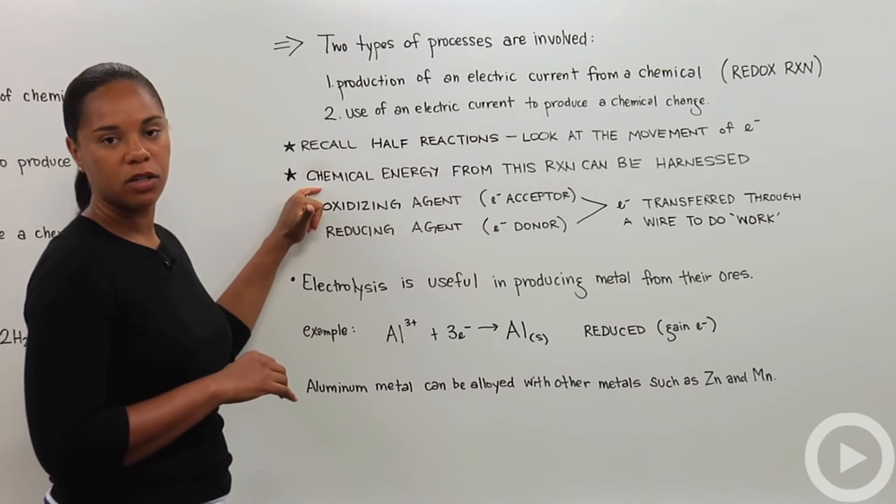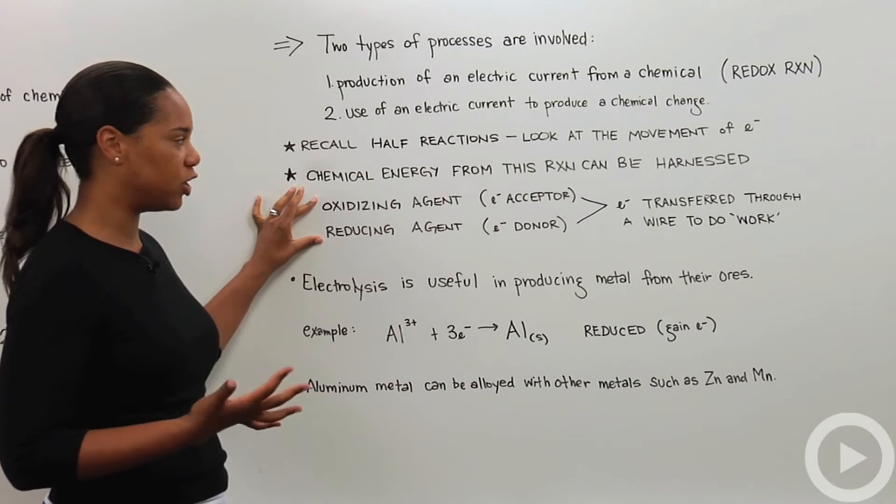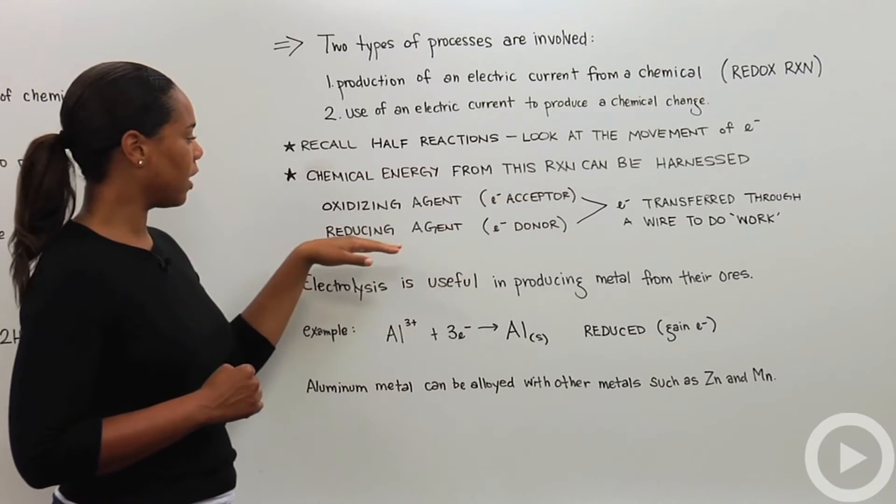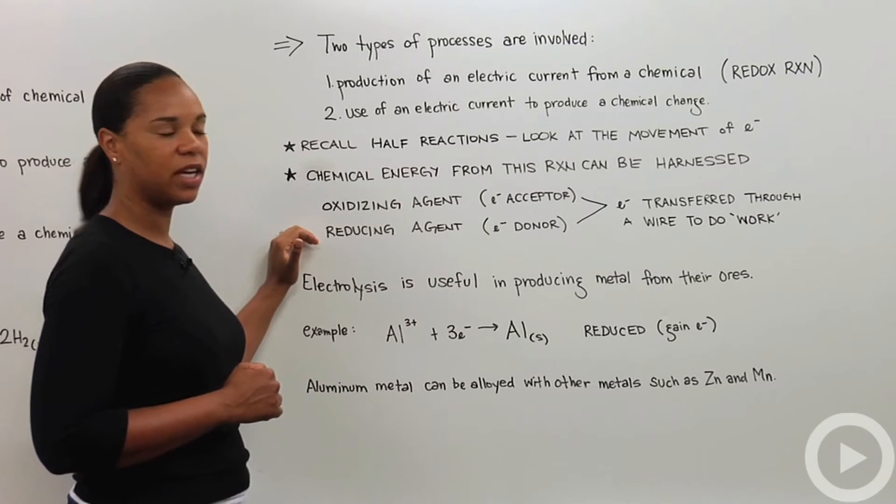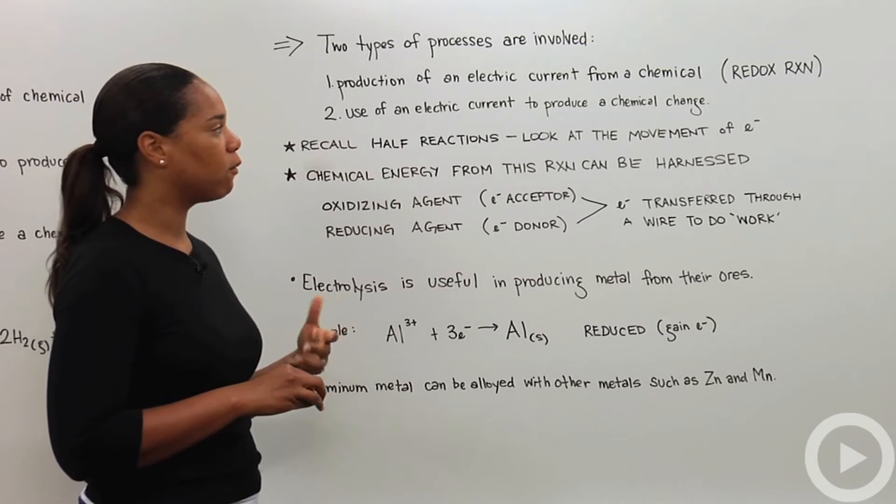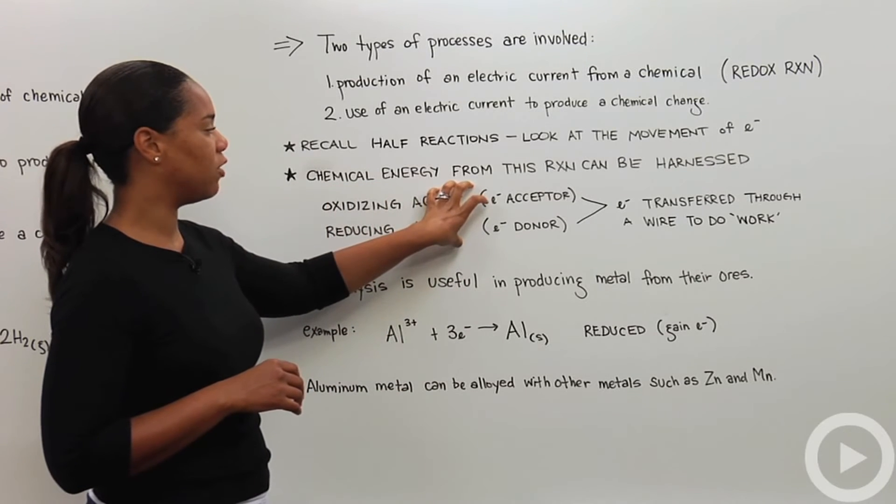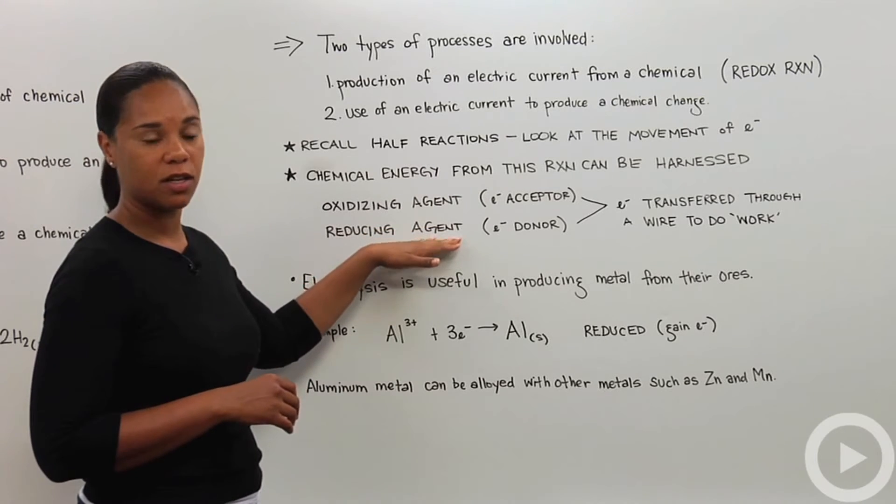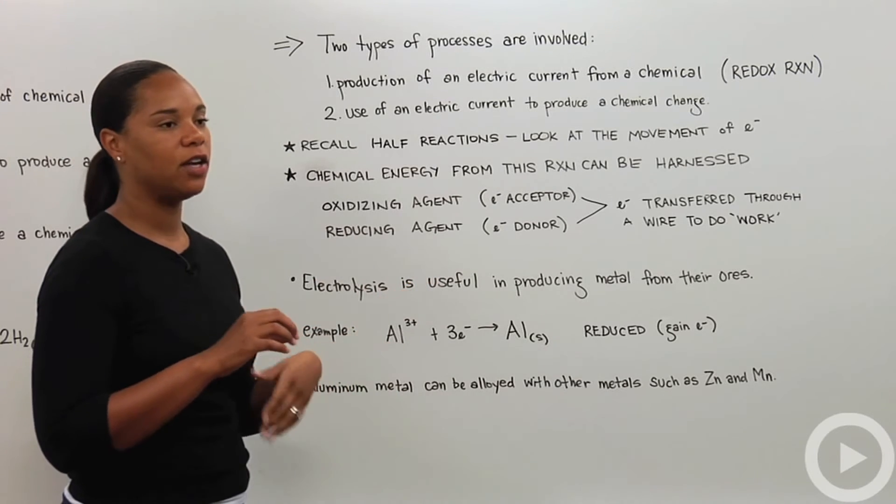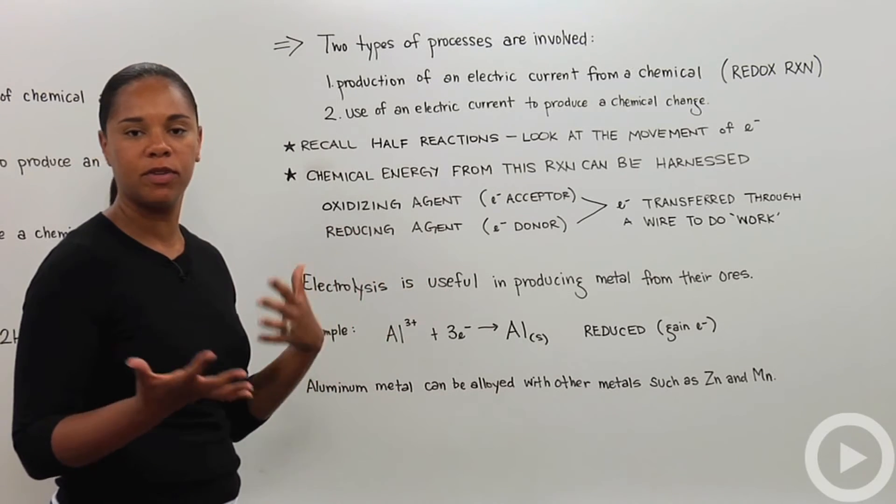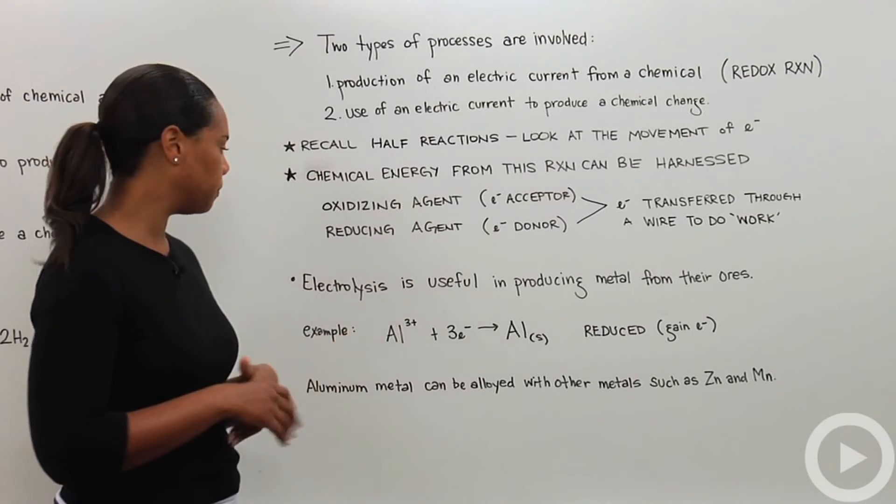From a redox reaction, you can harness that chemical energy. You'll have what we call an oxidizing agent or the electron acceptor, and a reducing agent or the electron donor. Try not to get oxidizing agent and reducing agent confused with which one is actually being oxidized and which one is being reduced. You can separate the oxidizing agent and the reducing agent, and then have a way to watch the electrons being transferred from one to the other. You can connect them to some device to make it do work. Basically, you use the electrons to produce and harness that energy.